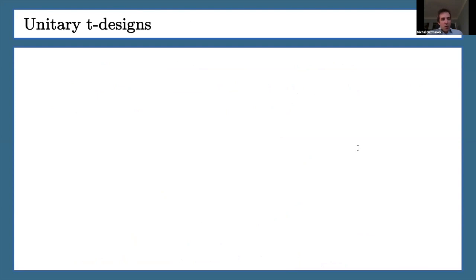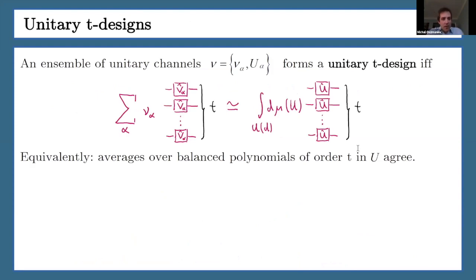Moving to the T designs, it's another notion that approximates the properties of the unitary group. I have an ensemble of unitaries. I'm going to say that they form a T design if I take T copies of my gates and then I take the average over this measure mu. Then the channel that I'm getting is the same as if I had taken those gates from the unitary group and averaged over the Haar measure over this group. So equivalently, I can say that averages with respect to this measure over balanced polynomials of order T should agree.